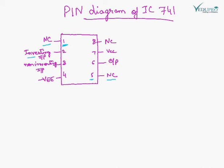Pin number 2 is inverting input. Pin number 3 is non-inverting input. Pin number 4 is where negative power is applied. Output is taken from pin number 6. Positive power is applied to pin number 7. And pin number 8 is not connected.